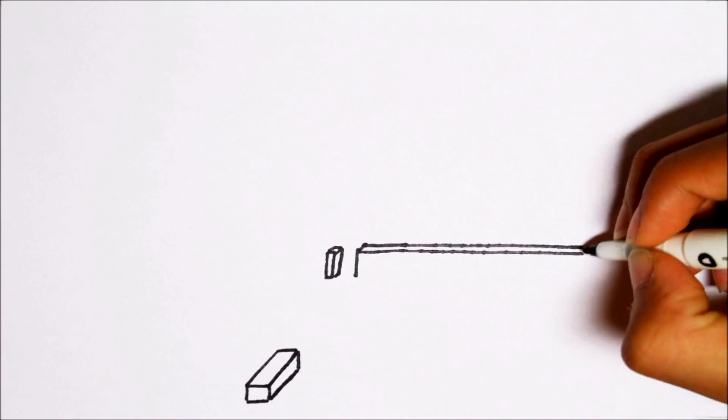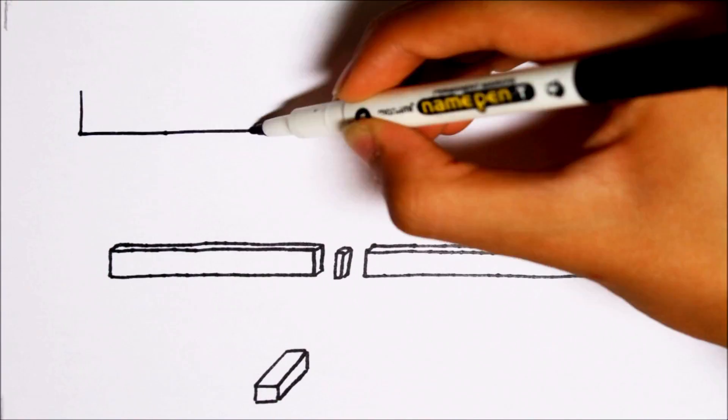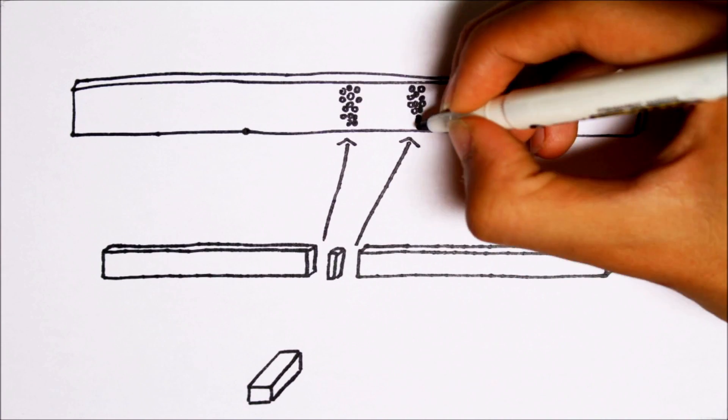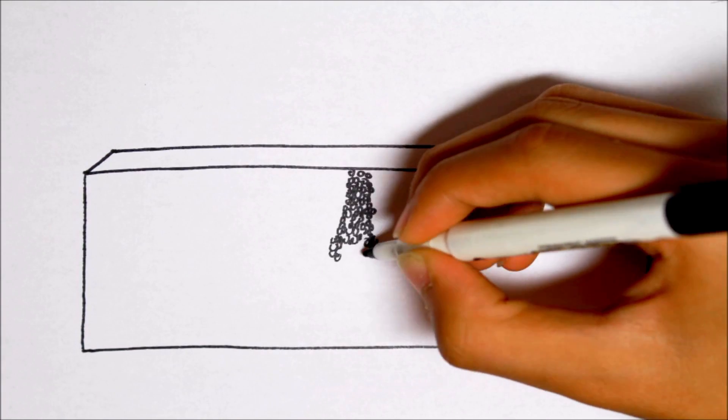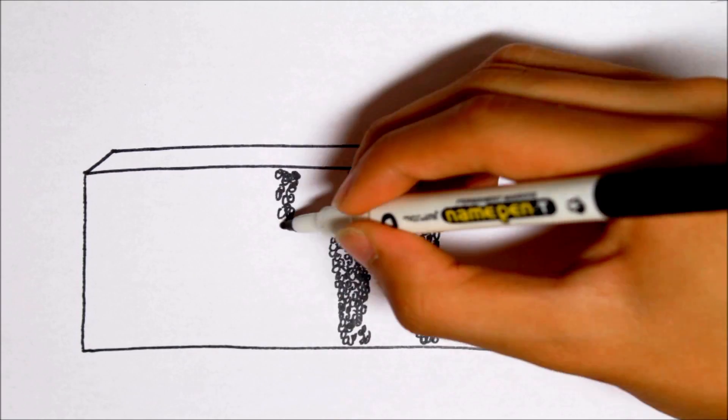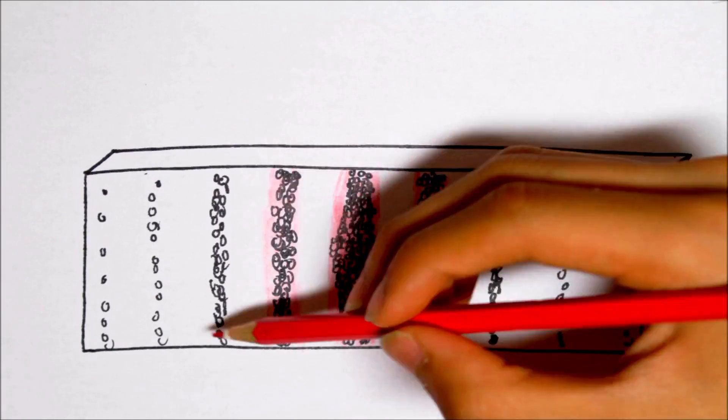You would expect the experiment results to look something like this, because the particles would most likely land right behind the two slits, right? Instead, they looked like this. How in the world did the particles arrive right between the two slits, and what's that weird stripey pattern?